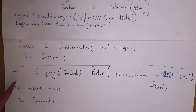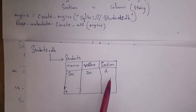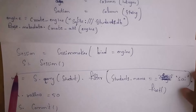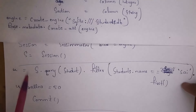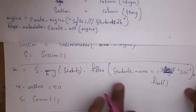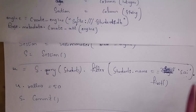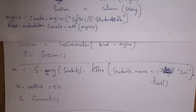For the Update operation — for example, I want to change Sai's roll number from 20 to 50. Write `u = s.query(Students).filter(Students.name == 'Sai').first()`, then set `u.rollnumber = 50`. This changes Sai's roll number from 20 to 50. Then commit with `s.commit()` to save the change.